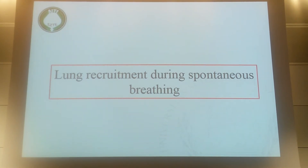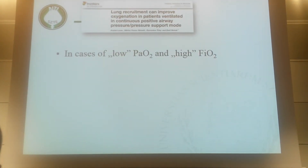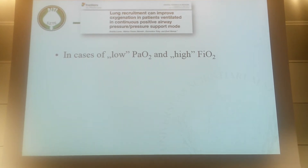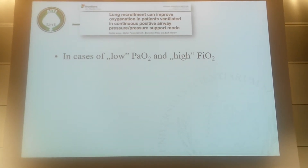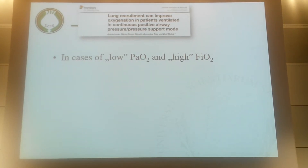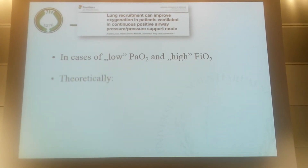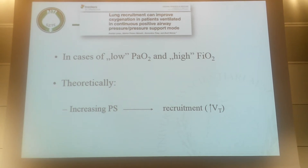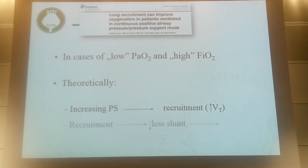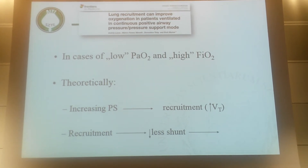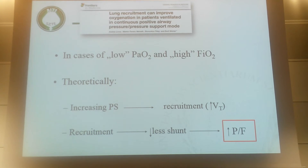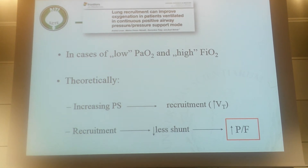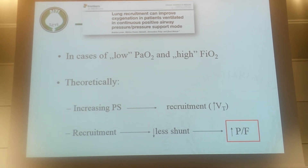Regardless, we decided to do a lung recruitment study during spontaneous breathing. The rationale was: all patients had a tracheostomy and were in the long-term ventilation weaning phase. Whenever we saw a low-ish PaO2 or need for higher FiO2, we considered that lung recruitment could be beneficial. If we increased pressure support and there was an increase in tidal volume, this should indicate recruitment; if recruitment occurred, shunt would decrease, the PaO2/FiO2 ratio should increase, and therefore FiO2 could be reduced — pushing patients toward what is physiologically good for them.